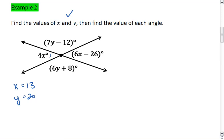Let's start with 4x. For that first angle, I can do 4 times 13, which gives me 52. So angle 1 is 52 degrees.